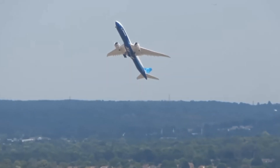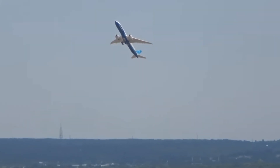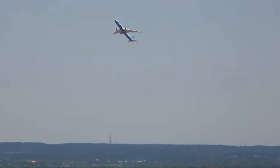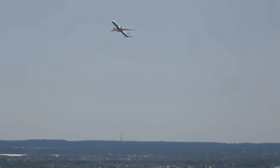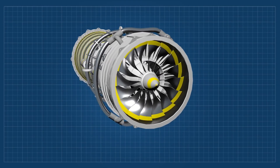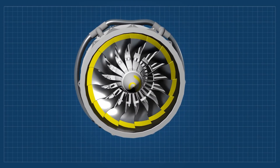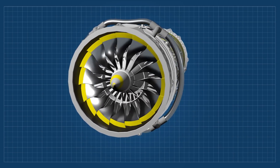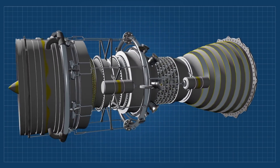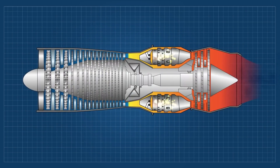A turbojet is the simplest of all aircraft gas turbines. It consists of a compressor to draw air in and compress it, a combustion section where fuel is added and ignited, and one or more turbines that extract power from the expanding exhaust gases to drive the compressor.